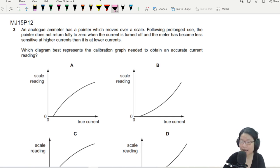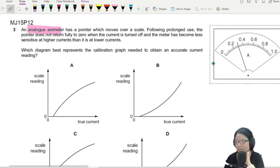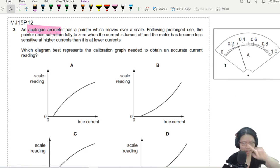We have an analog ammeter. An analog ammeter is the one with the needle, the ammeter with that needle pointer. This is an analog ammeter with a needle.